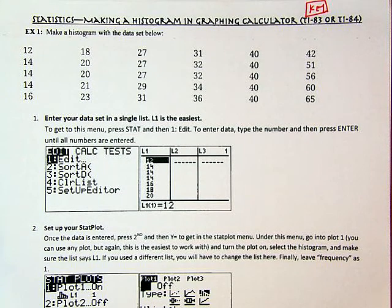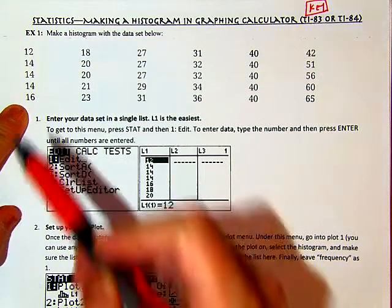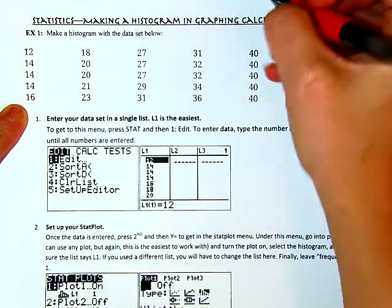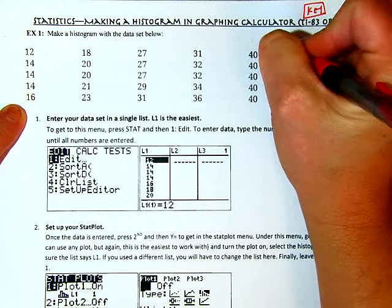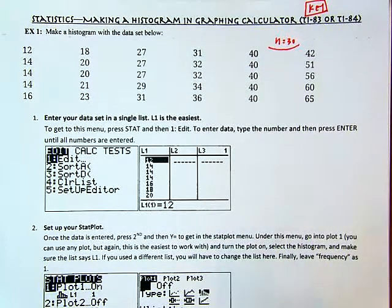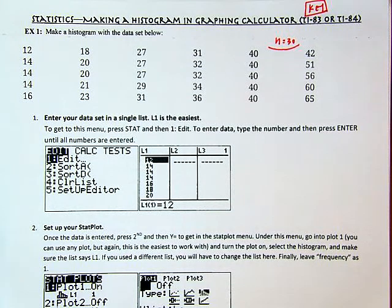So first up, here I have a whole list of data right here. It's already organized if you follow it by column in ascending order. And we have 30 total pieces of data. So our n value is 30. The very first thing that you have to do is enter your data set in a single list. L1 is always the easiest. And that's really what we have practiced in class.